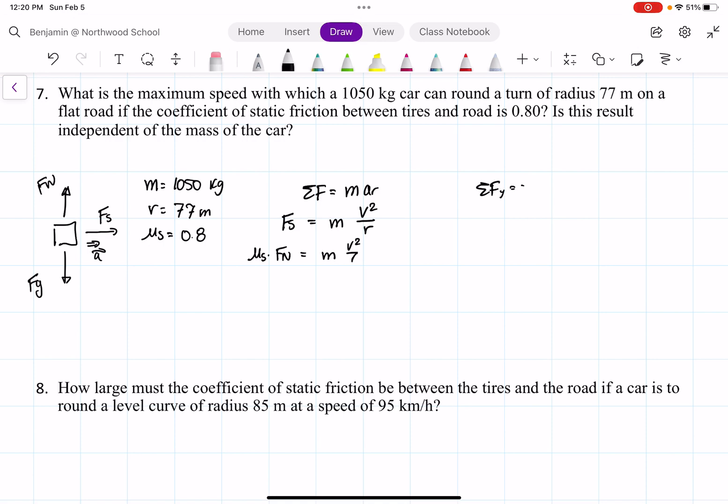We have net force in the y equals 0 because it's not going up or down. So we have the normal force minus f g is equal to 0, where f n is equal to the force of gravity, which equals mg.